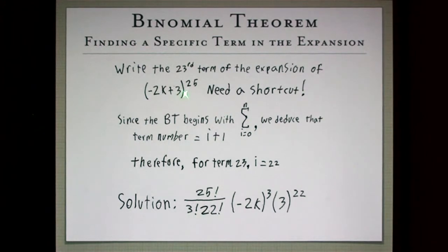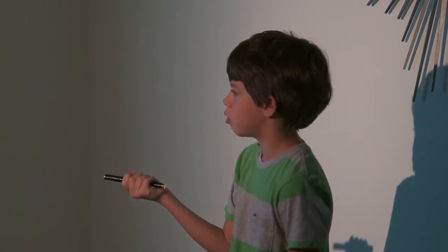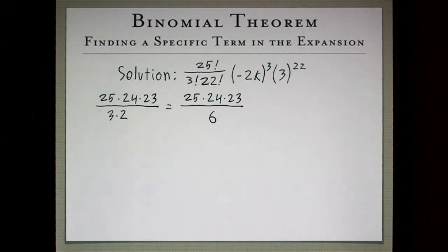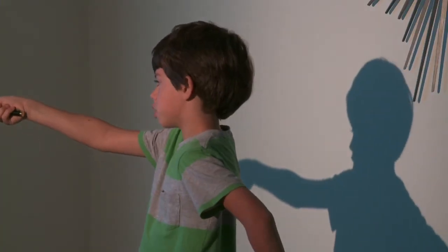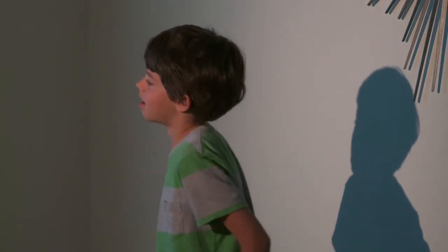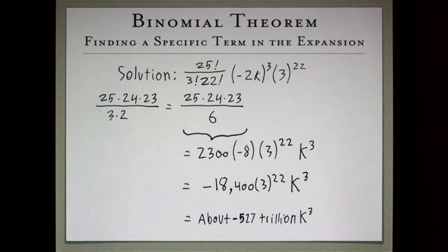So knowing that our i is 22, we get 25 factorial, which is our n, times 3 is 25 minus 22. And 22 is our i factorial, times negative 2k cubed times 3 to the 22nd. And so we need to find the coefficients. 25 times 24 times 23 over 3 times 2 is 25 times 24 times 23 over 6. That goes down to 2,300 times negative 8, because you're cubing that, times 3 to the 22nd, k cubed. Negative 18,400 times 3 to the 22nd, k cubed. And if you do that all out, you get about negative 527 trillion k cubed. So clearly you don't want to do that all out.